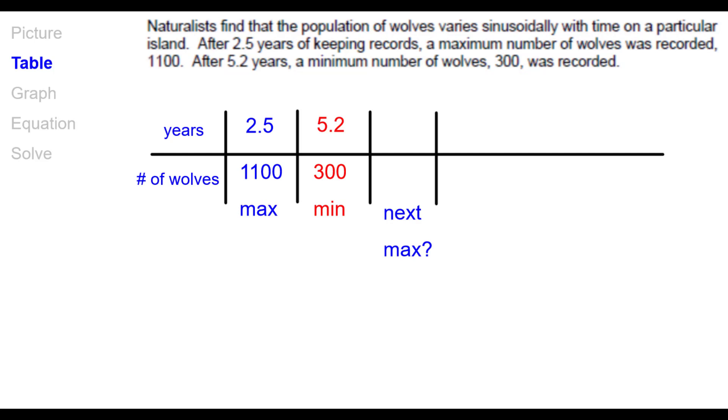Now from that, we should be able to figure out where the next maximum point is going to be. Pause as needed. So from 2.5 to 5.2 goes from a max to a min. And if we subtract those, we get 2.7. So for the next min to get to the next max, we'll go ahead and just add 2.7 to that 5.2 and get 7.9. And we know that's a max because it alternates max, min, max, min. So that's going to be at 1100.